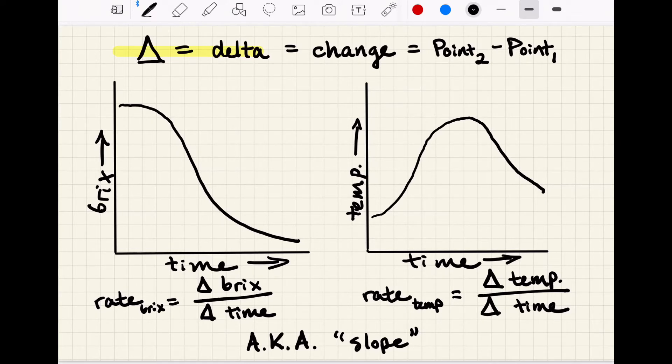When we look at things graphically like this, rate is also known as slope where a sharper slope indicates a faster rate of change and a more gradual slope indicates a slower rate of change.